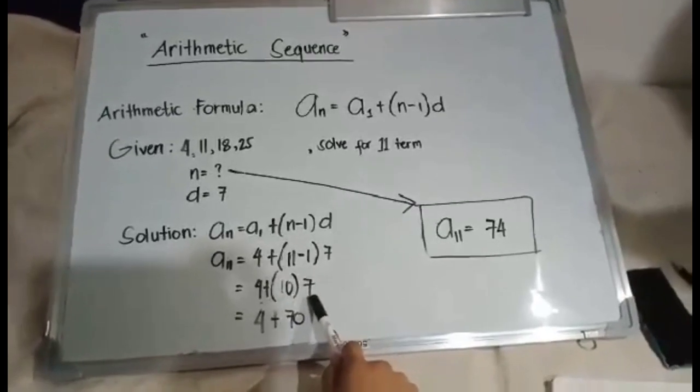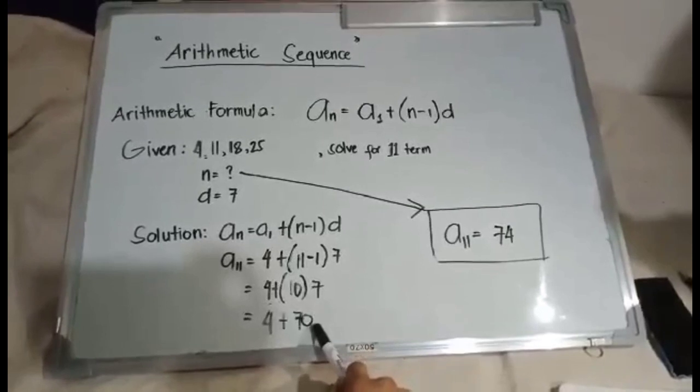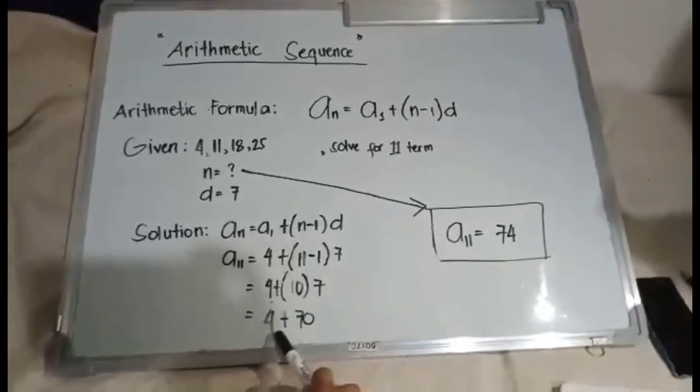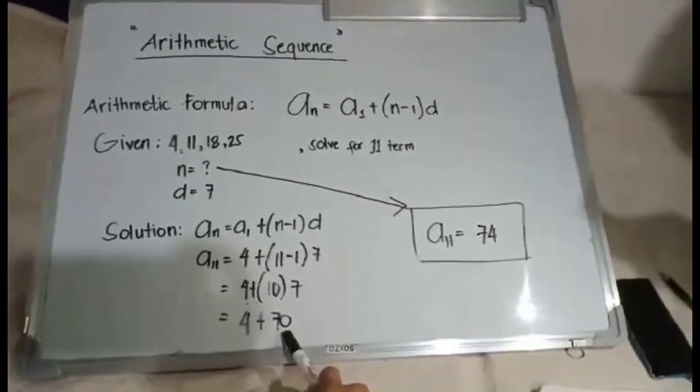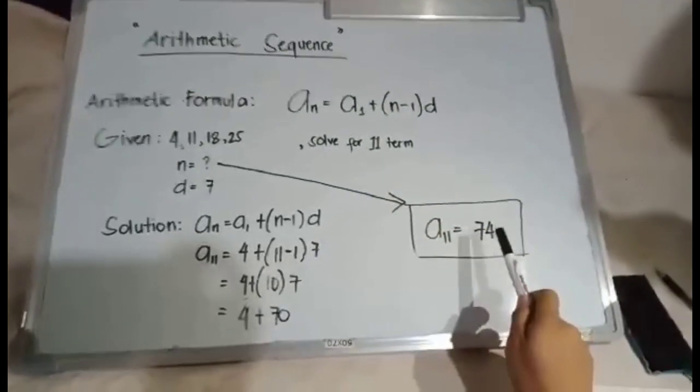And then 10 times 7 is 70, and then bring down 4. So 4 plus 70 equals 74, and our 11th term is 74.